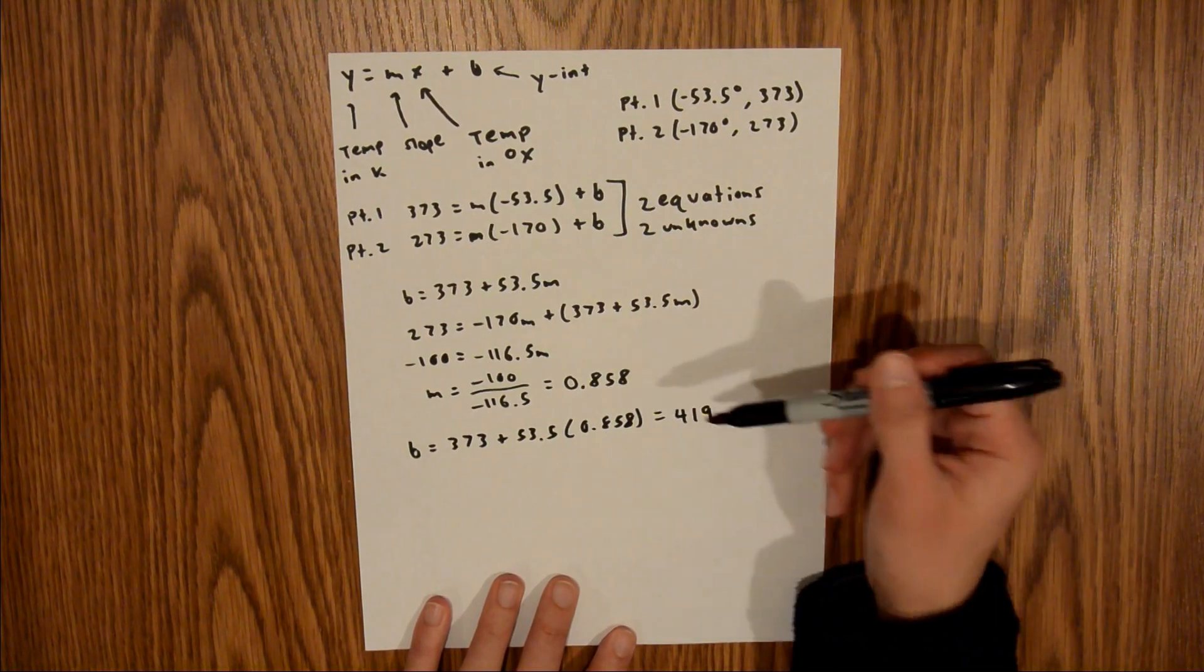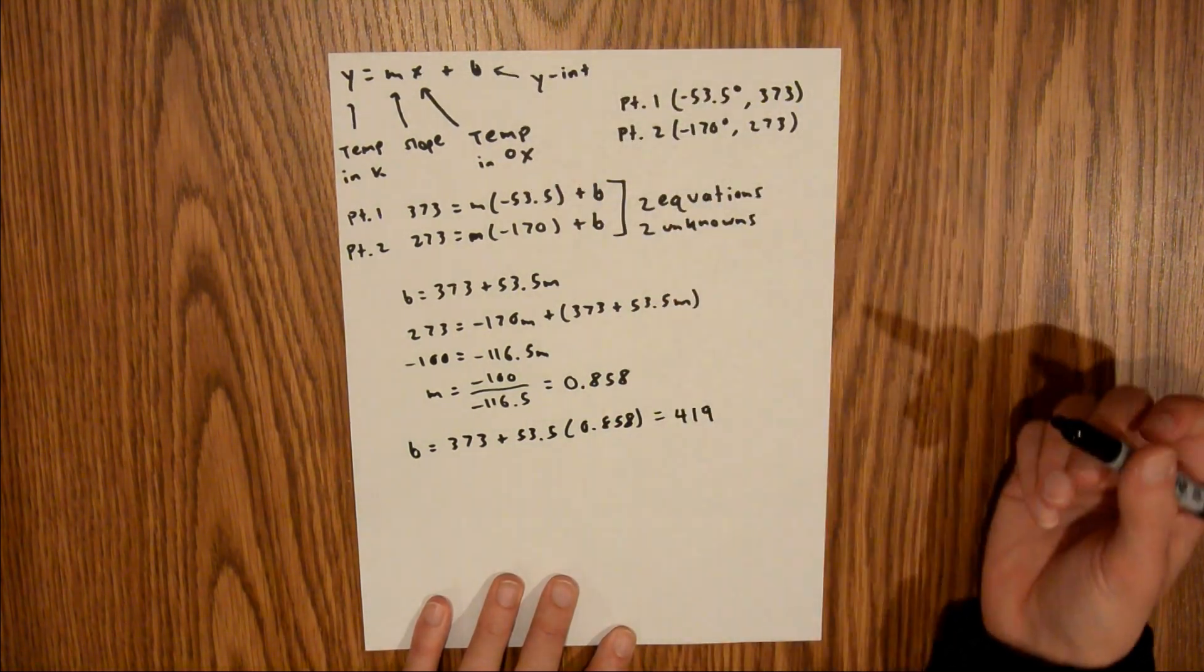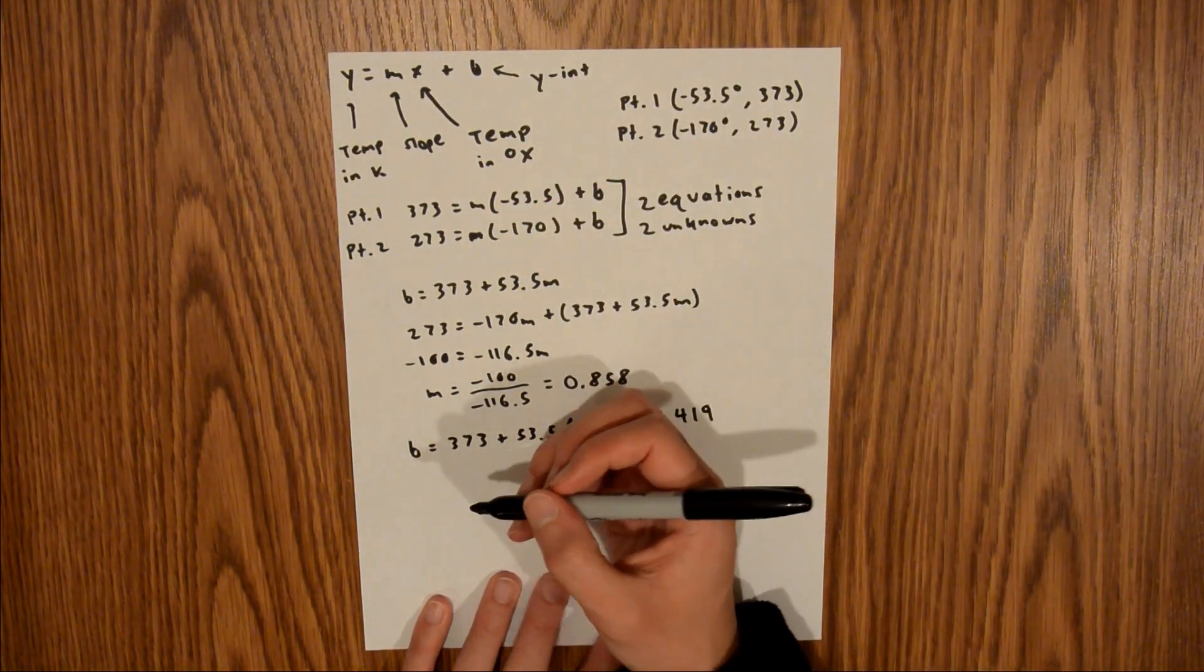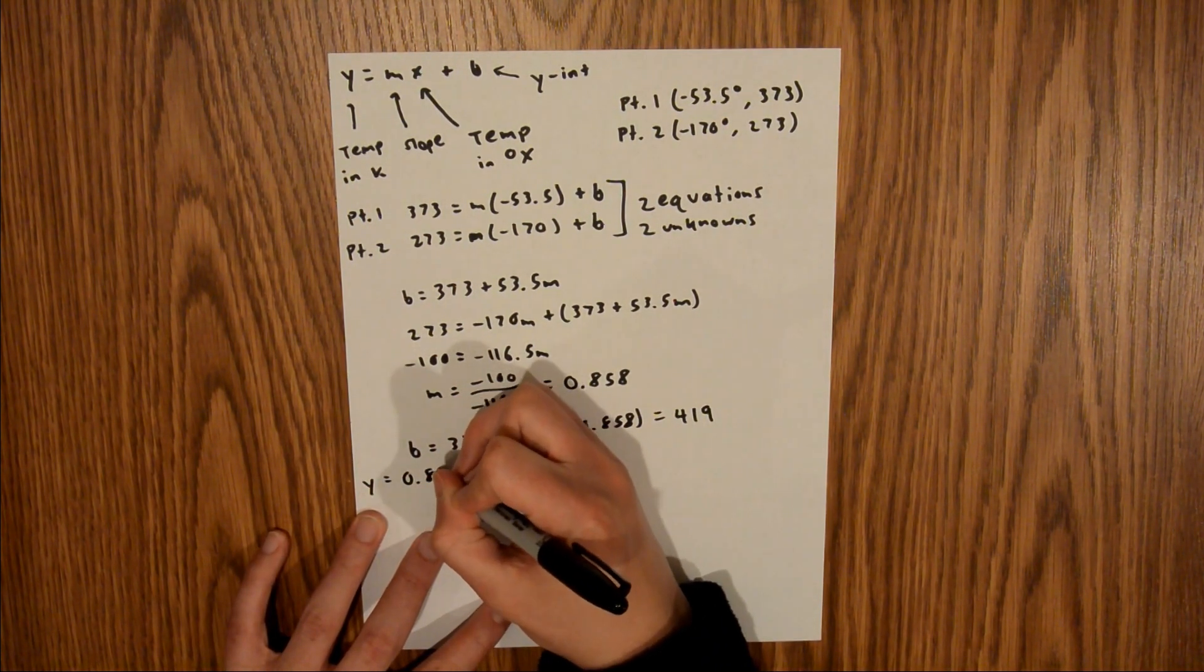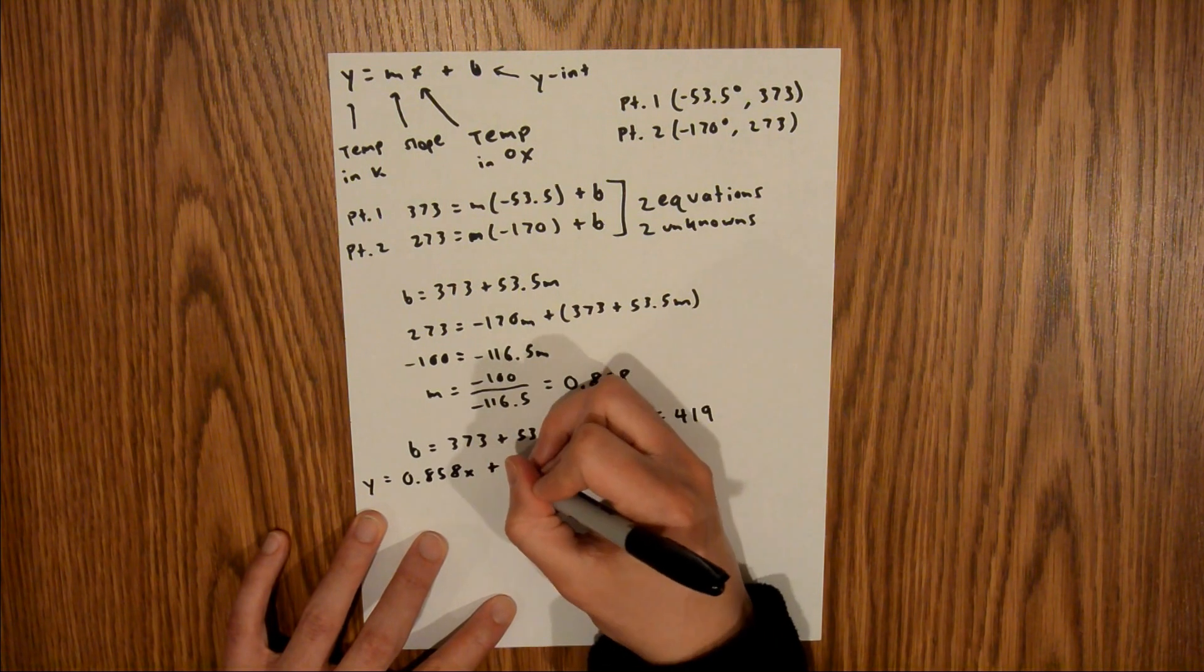And so now I have the m and the b that go into my generic equation, so I'm going to plug those back in there. That's going to give me y is equal to 0.858x plus 419.